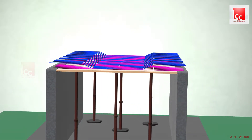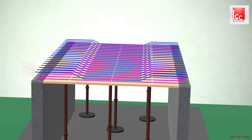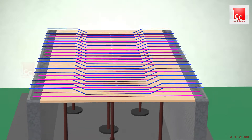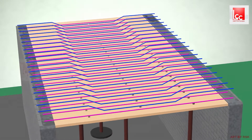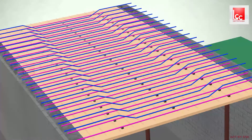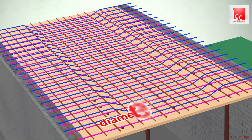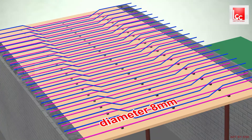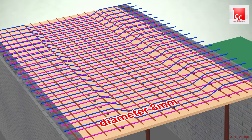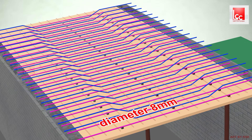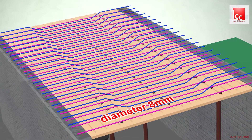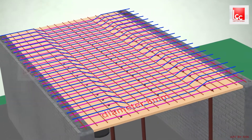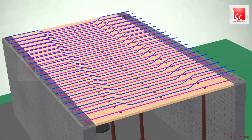After successful completion of laying, we will lay a distribution bar of diameter 8mm. As you can see in the video, we will have somewhat this type of view.